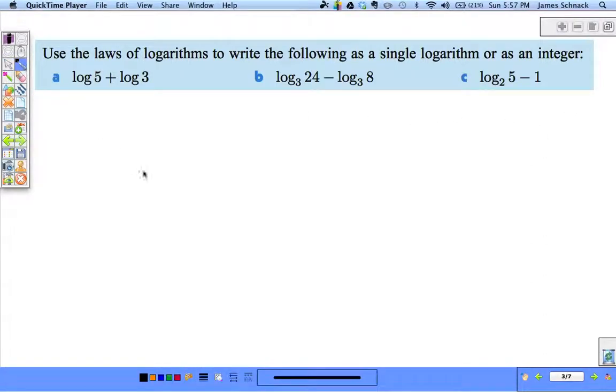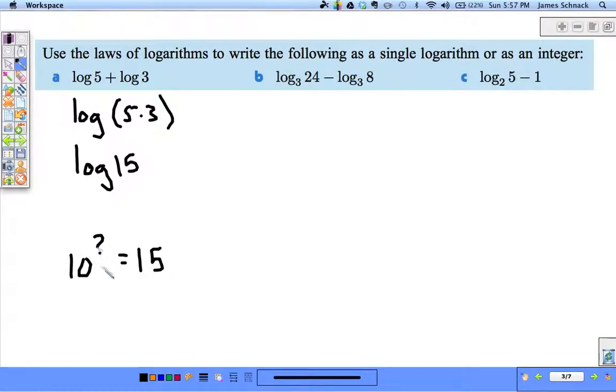Use the laws of logarithms to write the following as a single logarithm or as an integer. I'll show you an example here. First one. Adding two logs, they're both base 10. Notice no base written, that means they're base 10. So, since they're both base 10, we can multiply the 5 and the 3. Log 15. And now here's a quick question. 10 to the something, is that a nice way to get 15? Can we write this as a nice integer? No, not really. There's our simplified answer.